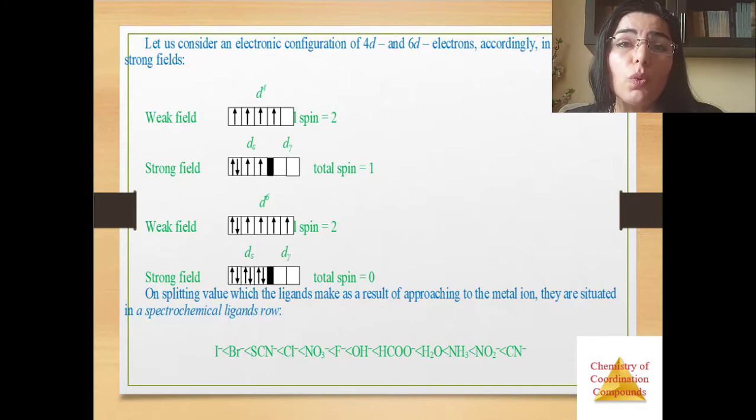If the ligand has a strong field and splitting is considerable, delta H more than P, then the electrons are arranged first on the lower levels, forming the pairs. Then after filling lower levels, they are located on the upper ones. As a result, a low spin complex is formed and a principle of the least energy dominates.